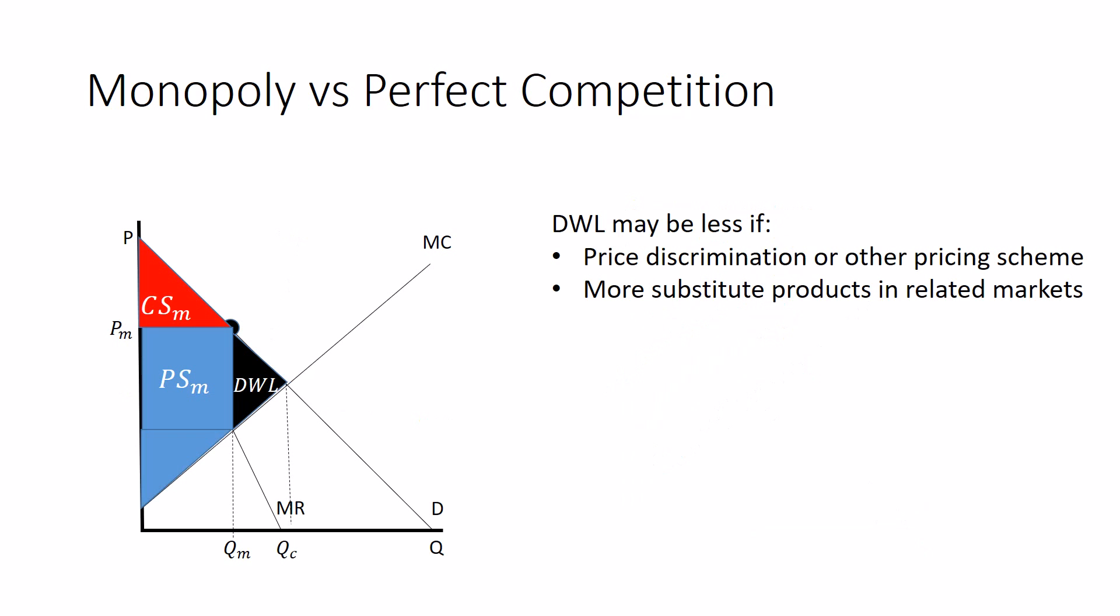There also will be less deadweight loss if there's a lot of substitute products in related markets. Substitutes would make the demand curve more elastic, which would mean that the monopolist couldn't mark the price up as much. The deadweight loss would become less because of it.